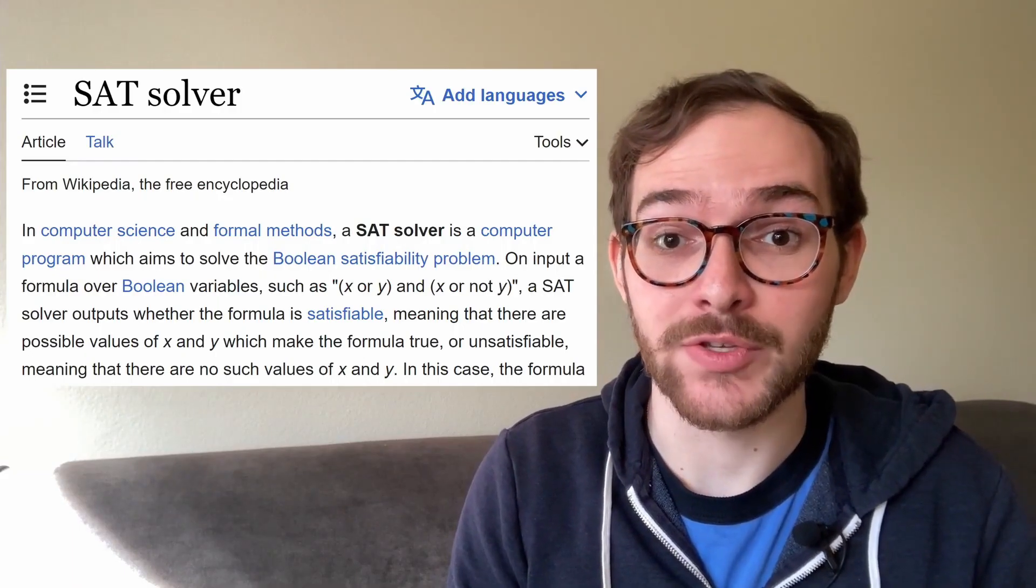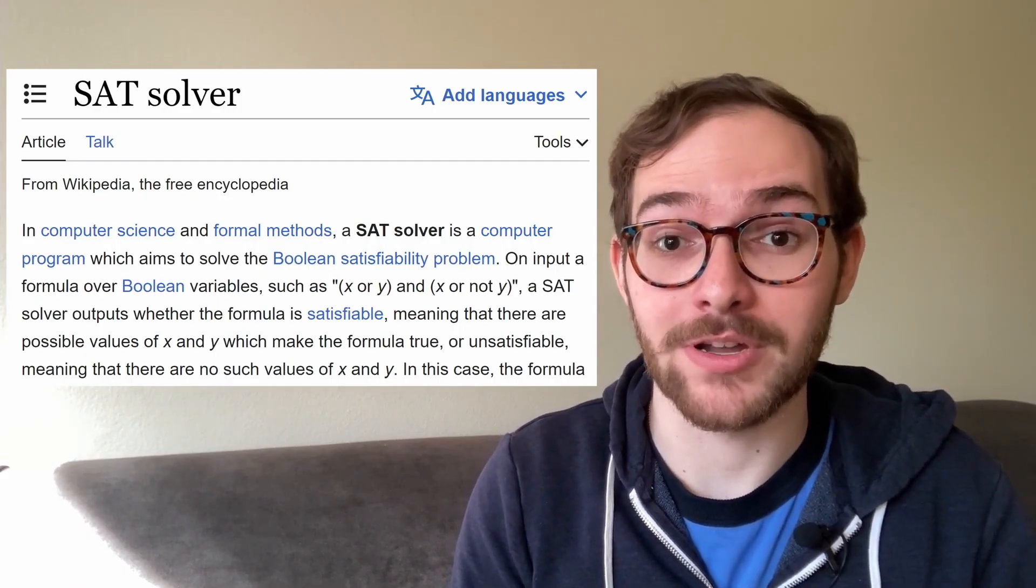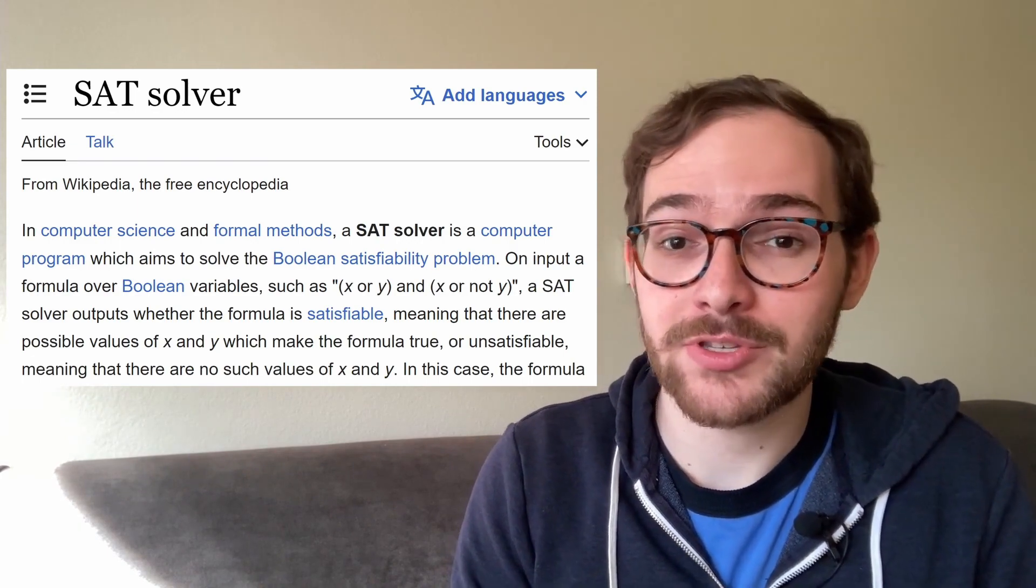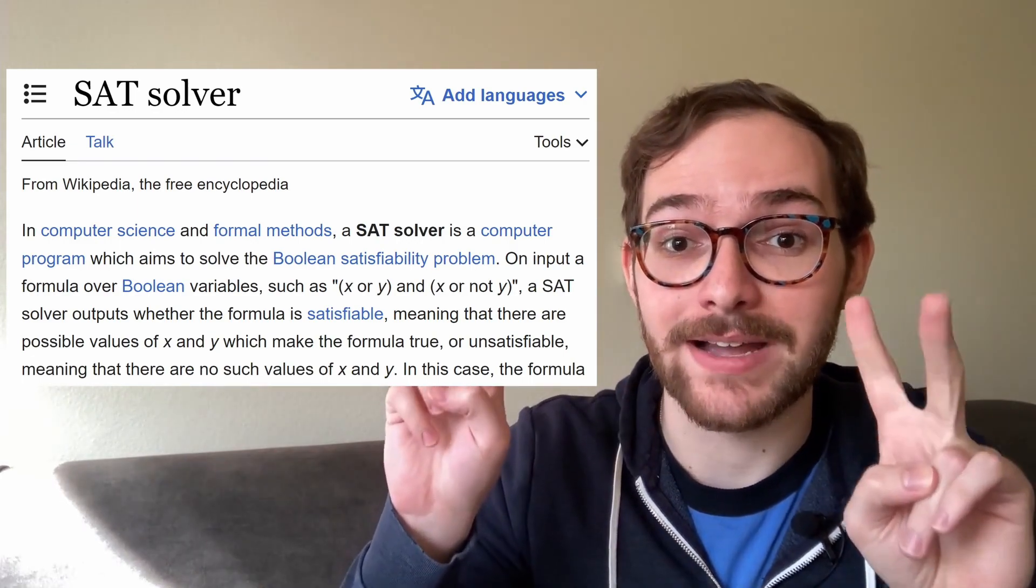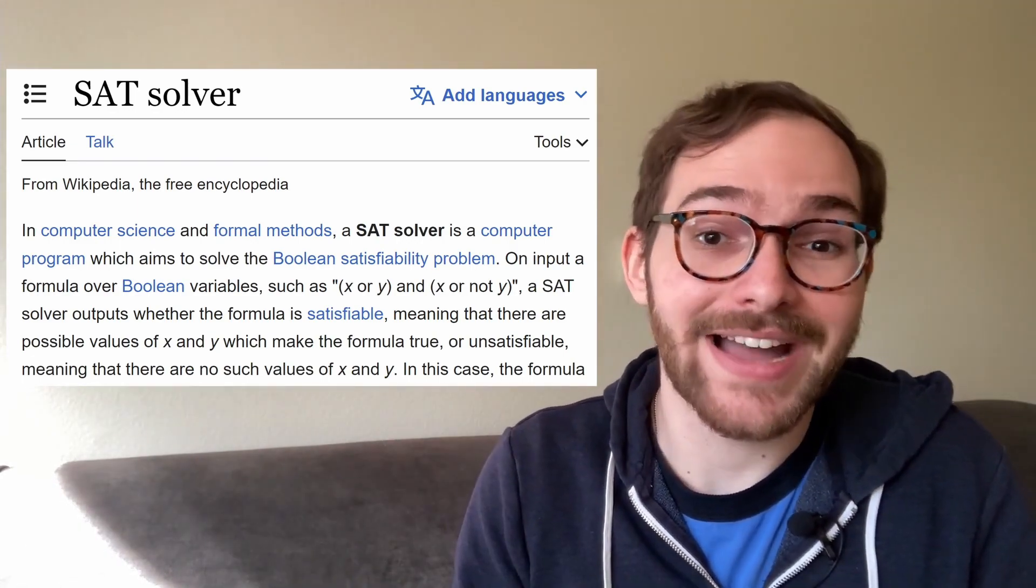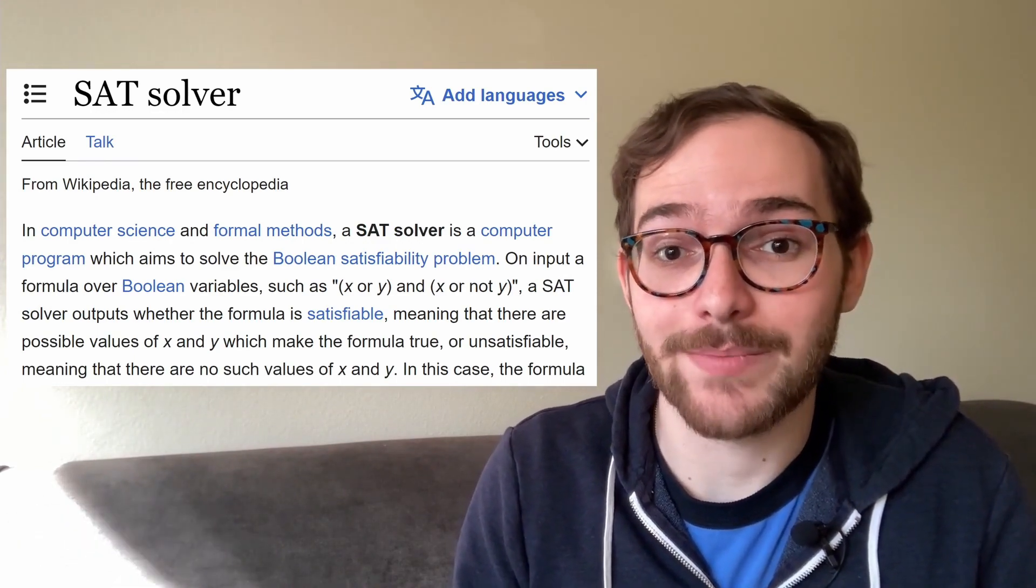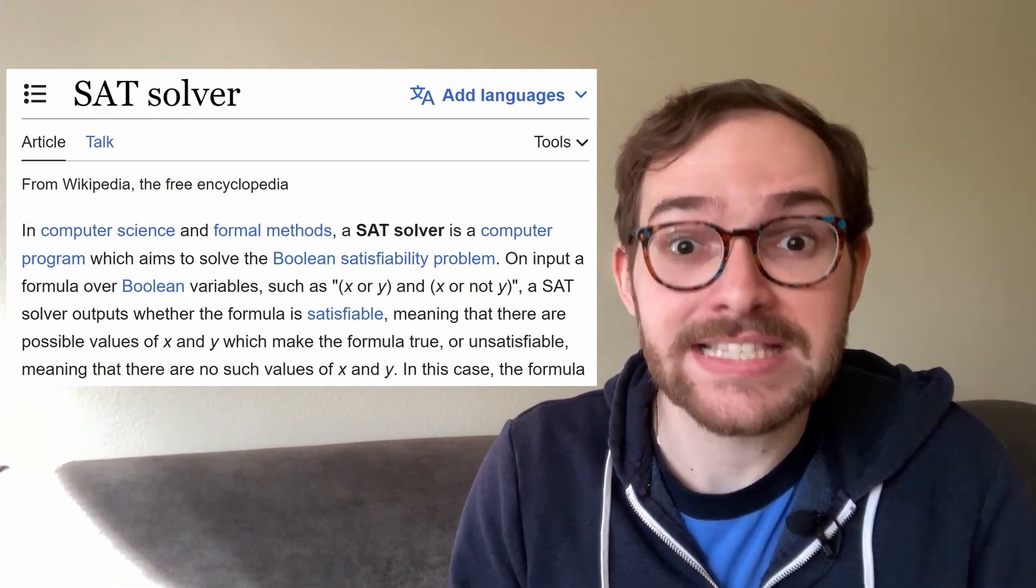One of the coolest ways that AI is used to do math research is with what's called a SAT solver. This is used to solve what's called the Boolean satisfiability question. And no, I don't know why SAT is in all caps. Maybe we should be calling it a SAT solver.